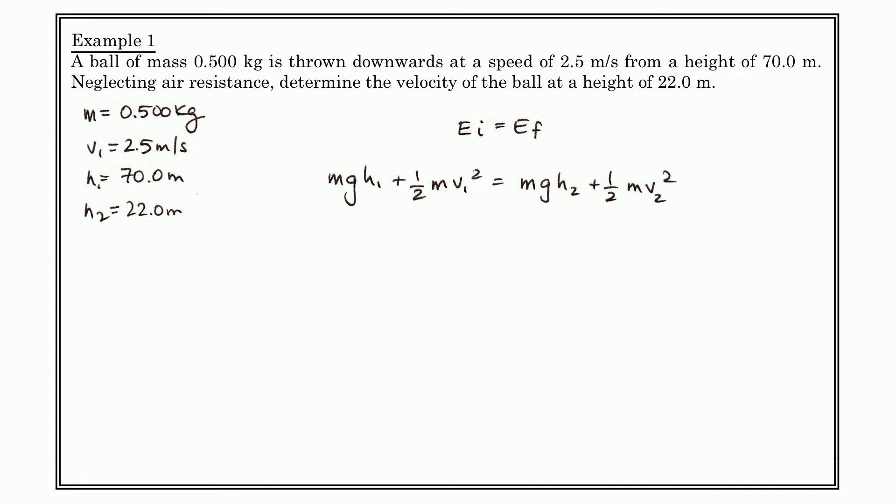And so if we take zero, if we take the ground as being zero, then we can sub in these numbers here. You'll notice that because mass appears as a common factor on both sides of the equation, here and here, and here and here, we can simply factor out mass, right? And it divides as a common factor on both sides.